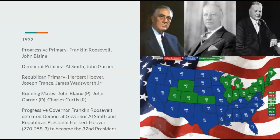Going on to 1932 — this is the Great Depression. Progressives would nominate Franklin Roosevelt, Democrats Al Smith, and Republicans Herbert Hoover. Running mates include Progressive John Blaine, Democrat John Garner, and Republican Charles Curtis. Franklin Roosevelt, being as popular as he is, would win this election very handily. Progressive Governor Franklin Roosevelt would defeat Democrat Governor Al Smith and Republican President Herbert Hoover, 270 to 258 to 3, to become the 32nd President — Vermont being the only state Hoover would win.